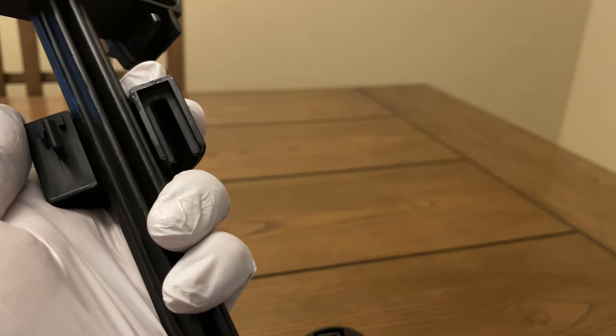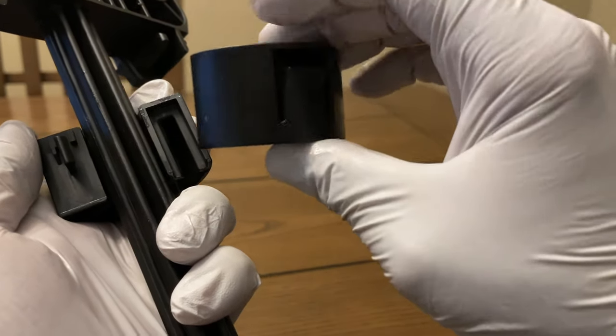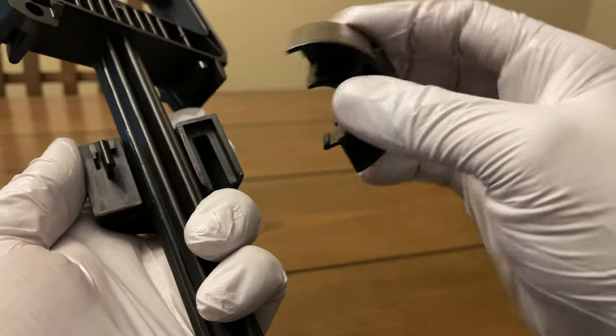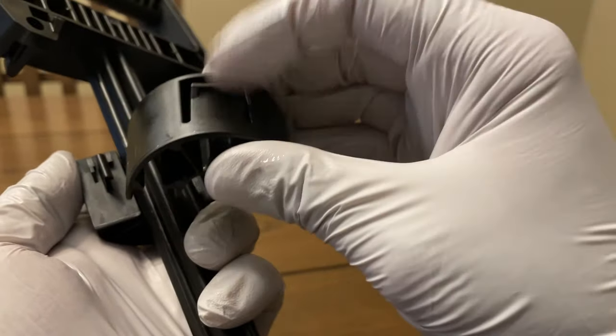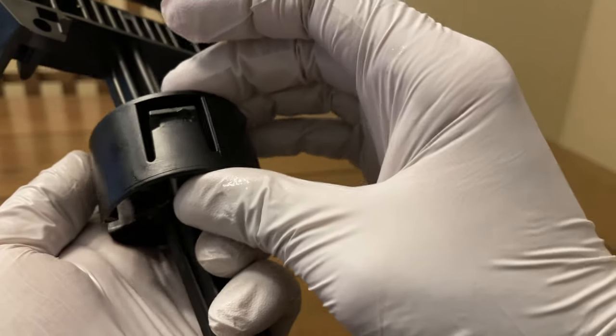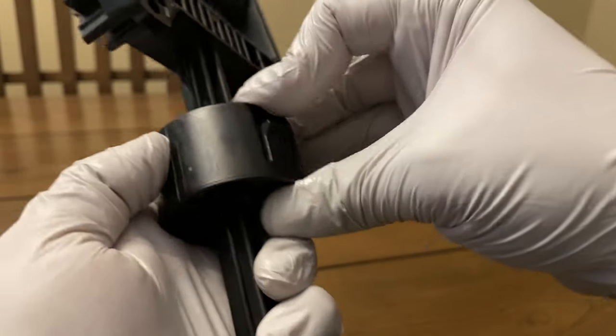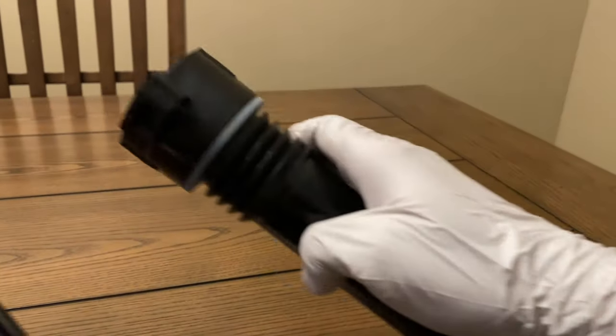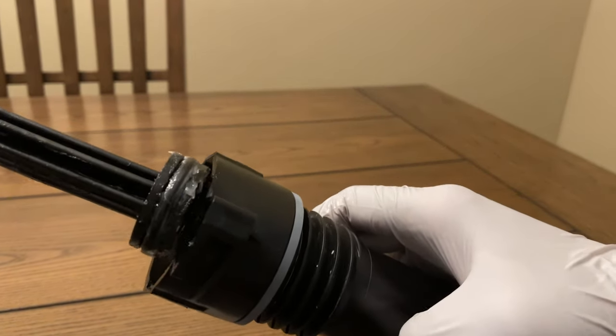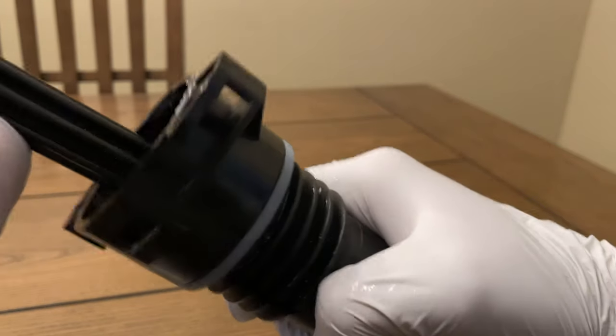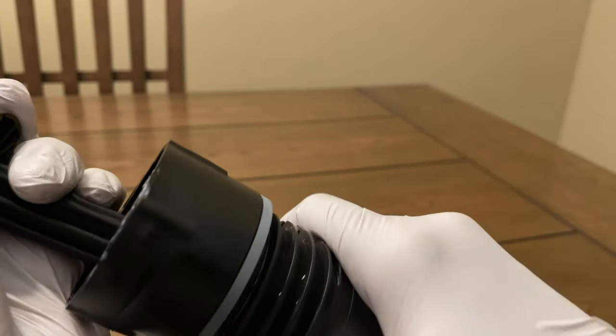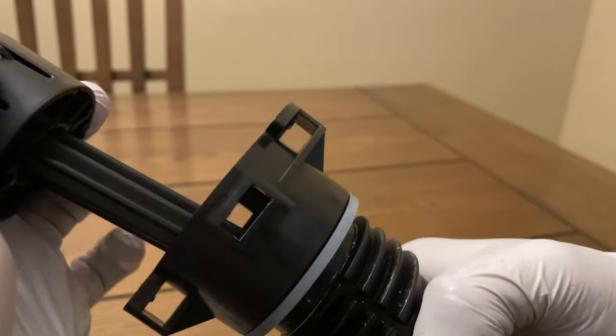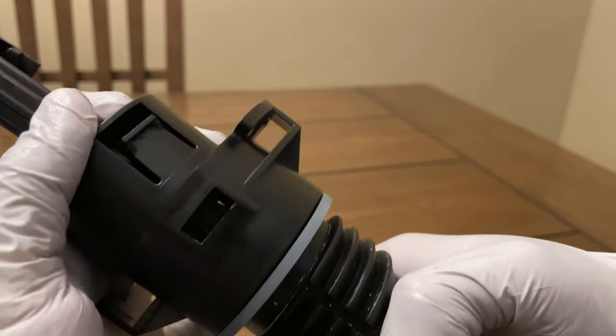Now we will reassemble the ring with the tabs into the plunger back again. Just make sure that the tabs are pointing up like this. And once you're ready, just take the cylinder and insert the plunger back again. Make sure that the tabs are aligned with the holes like this.